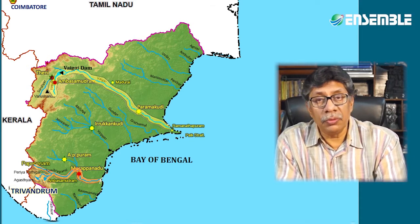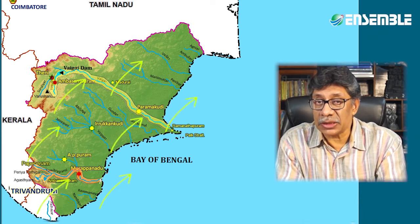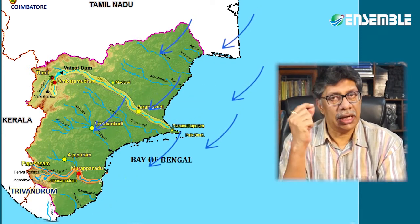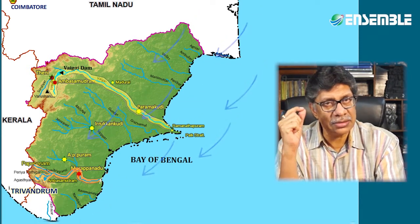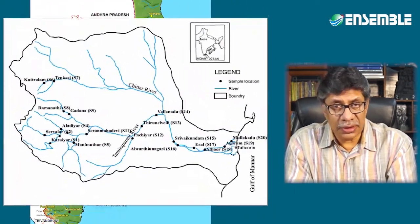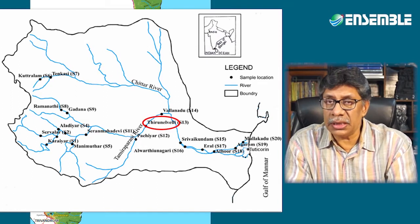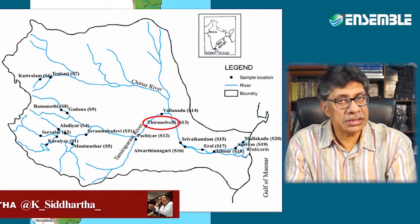Unlike most other Indian rivers, the Tamirparni is fed by both the south-west as well as the north-east monsoon, which makes it unique. Prior to the bifurcation of the Tirunelveli district, the Tamirparni was the only major river in Tamil Nadu which had its source and end in the same district. That was the story of rivers flowing into the Bay of Bengal region.